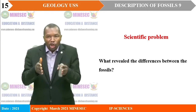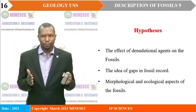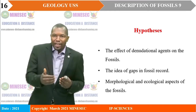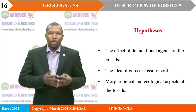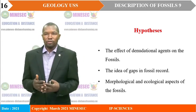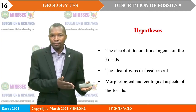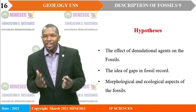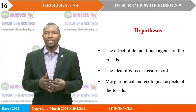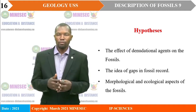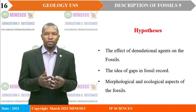What did he consider in order to bring out these differences? In our hypothesis: was it the effect of denudational agents on the fossils — that is, weathering, erosion, and transportation? Was it the idea of gaps in fossil records? Or did he consider the morphological and ecological aspects of the fossils? As we go through our lesson, we shall see which of the hypotheses he used to bring out the differences.